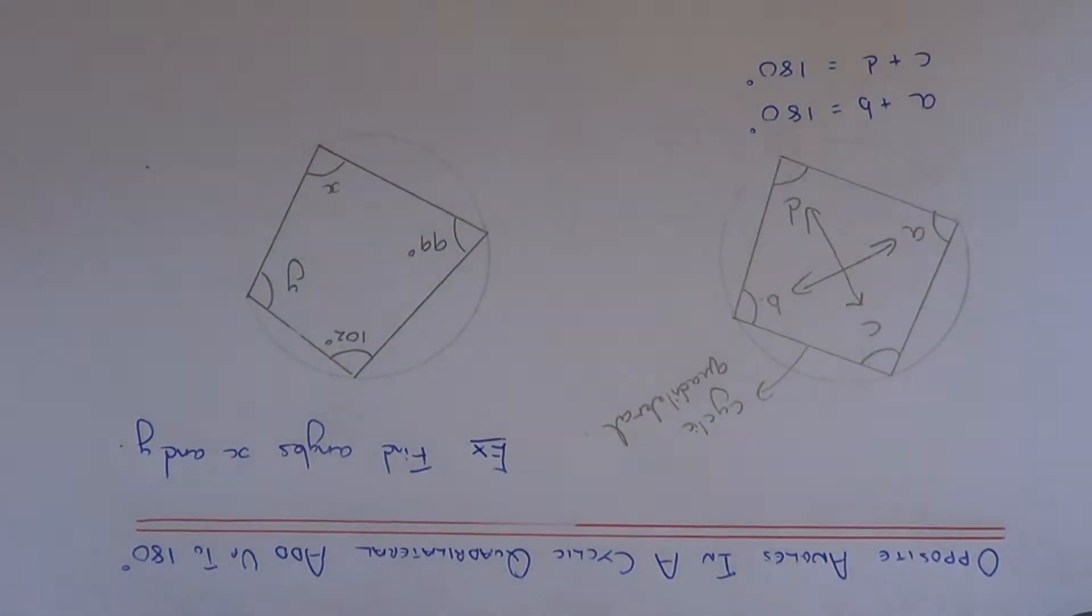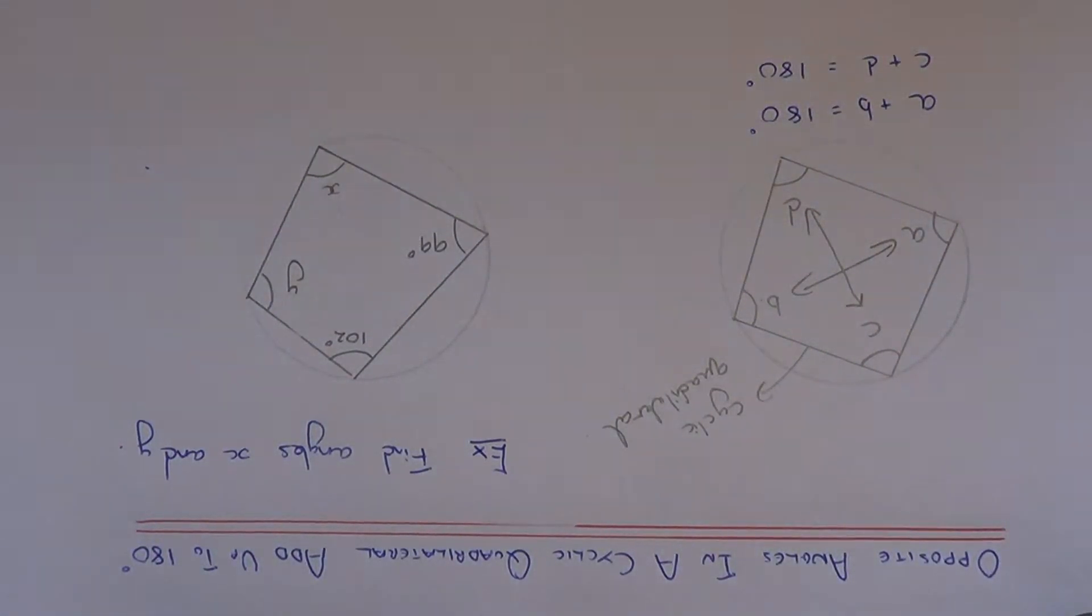Hi, today we're going to go over the circle theorem that the angles in a cyclic quadrilateral add up to 180 degrees. So let me quickly explain what this means then.